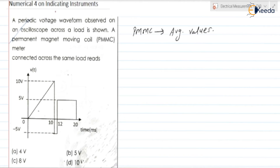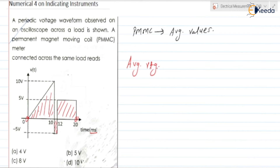Checking the waveform: it has a triangular section, a rectangular positive section, and a negative rectangular section. The time period is 20 milliseconds. To find the average value: average V(t) = [area under triangle + area under positive rectangle − area under negative rectangle] / total time period.